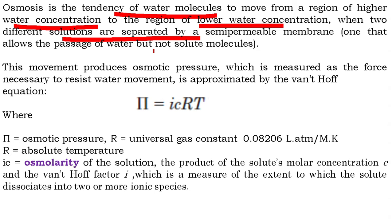Remember, ATP or energy is not consumed in this process. The movement produces osmotic pressure — or better, the movement is down an osmotic pressure gradient. This pressure is measured as the force necessary to resist the movement of water, or as the pressure required just to stop the flow of water.